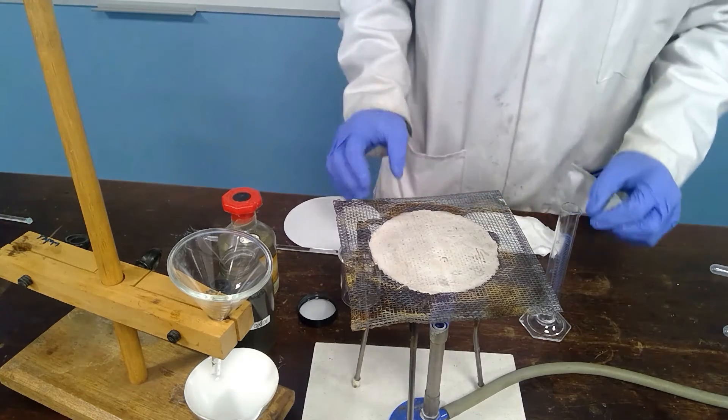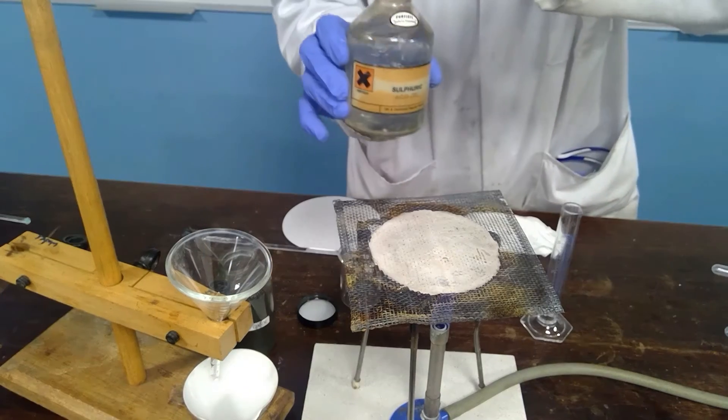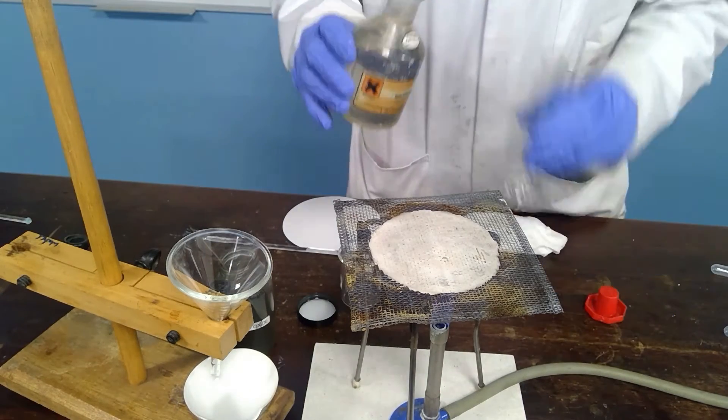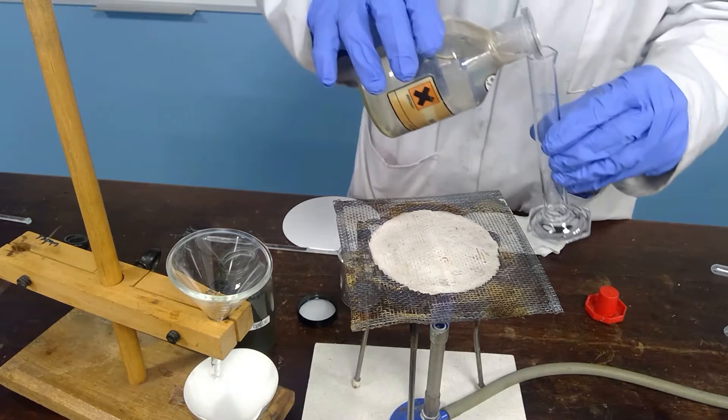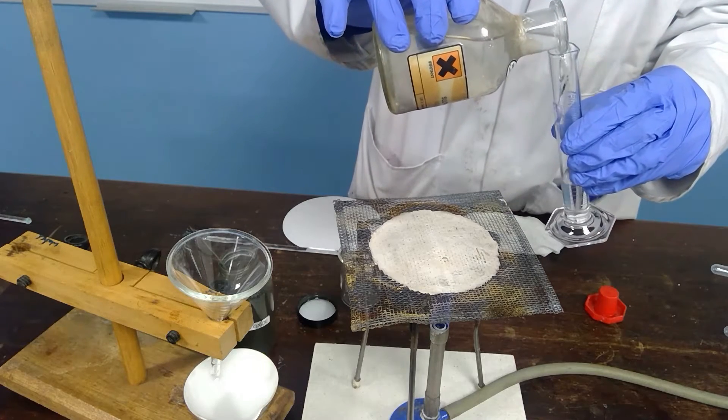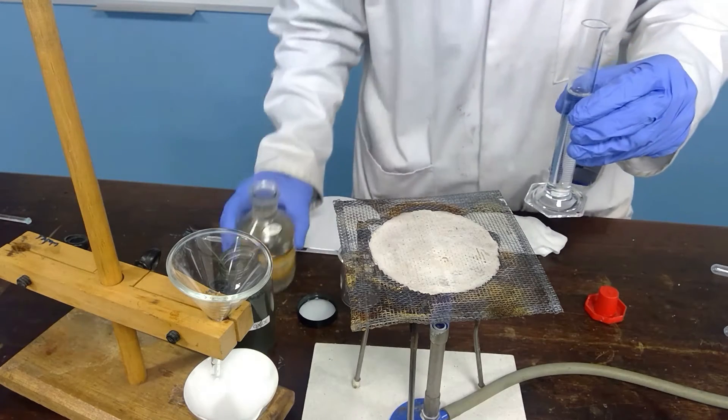To speed things up we are going to use sulfuric acid which is heated. We're using approximately 25 cm cubed of the sulfuric acid. This is dilute sulfuric acid.